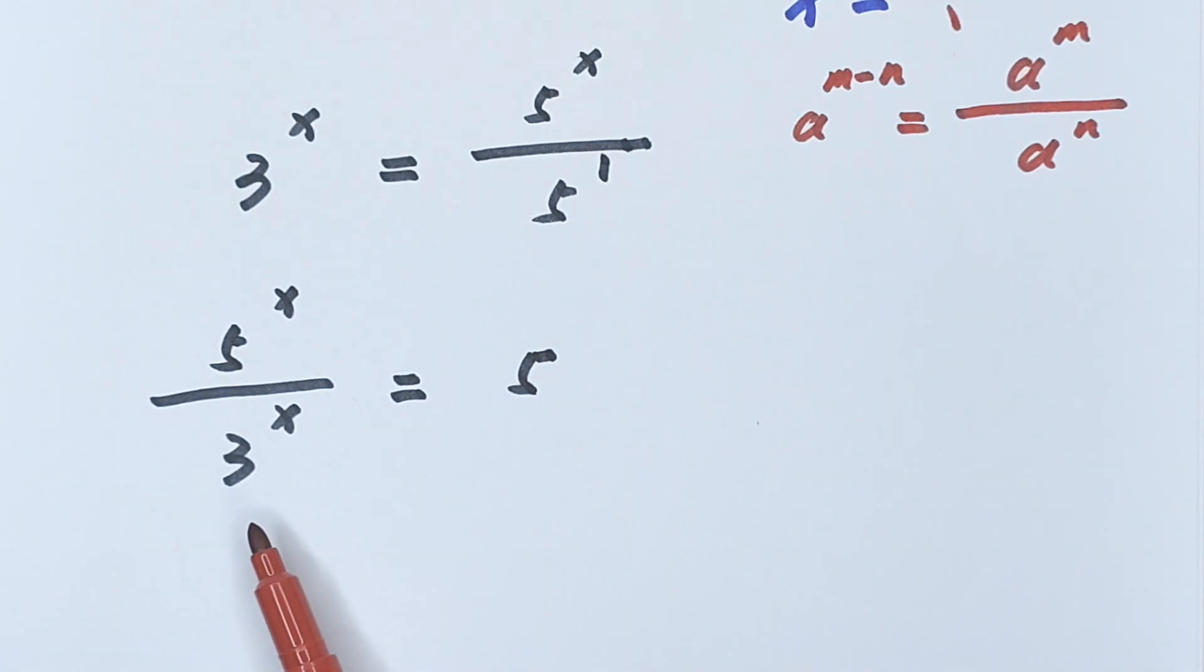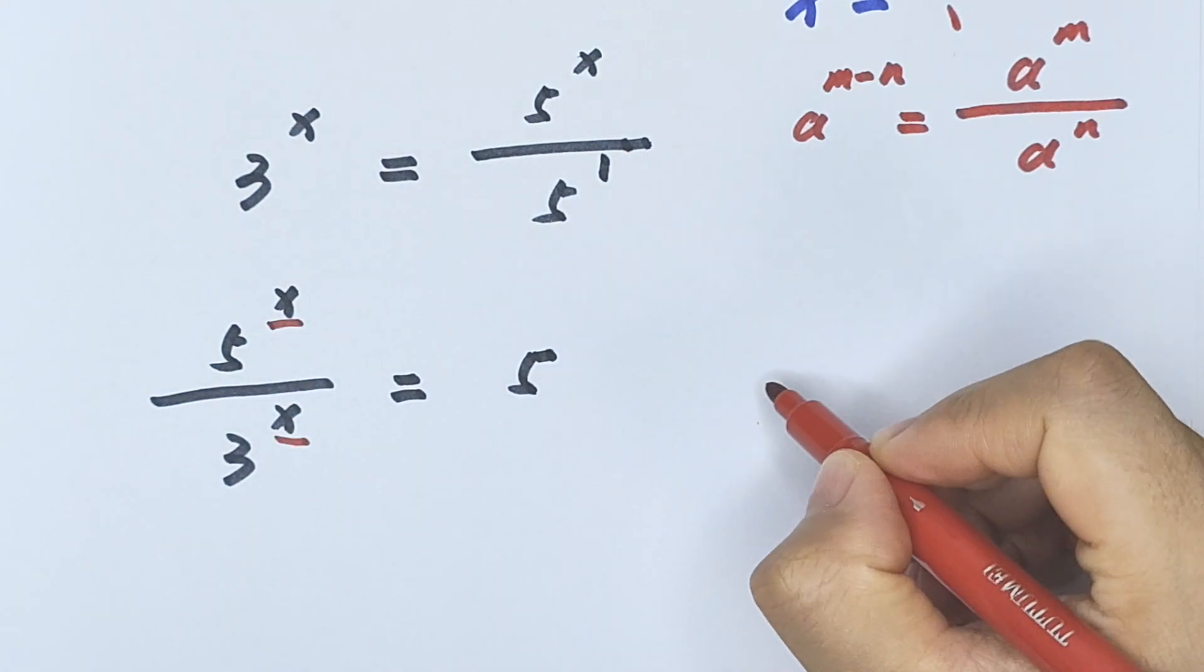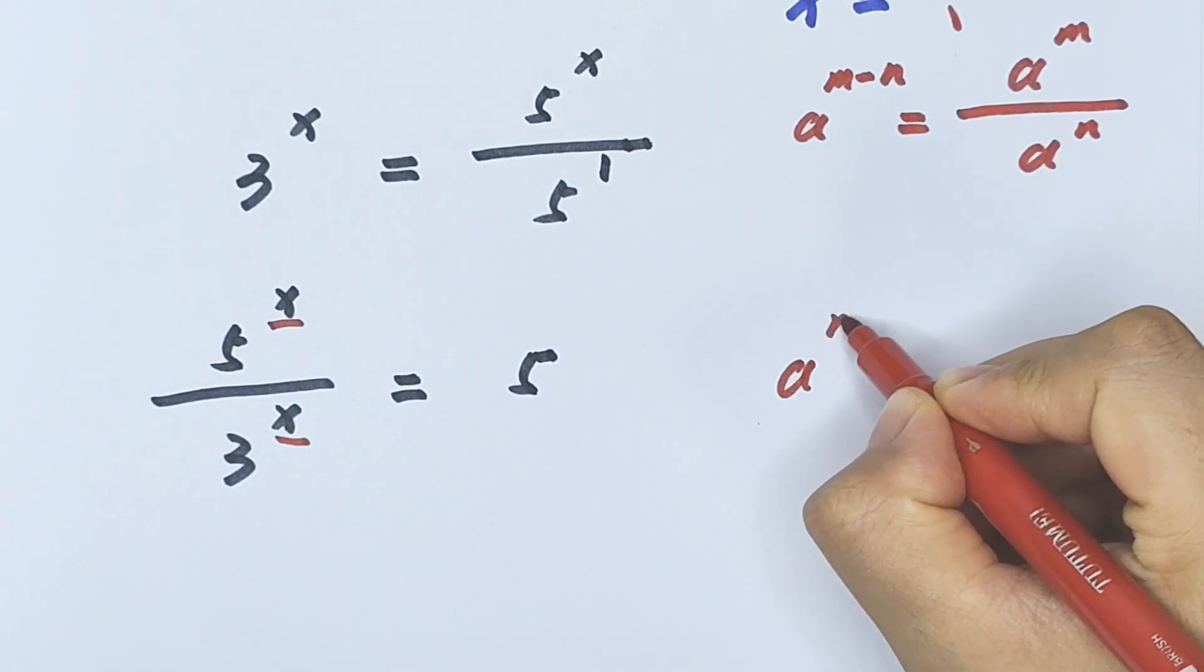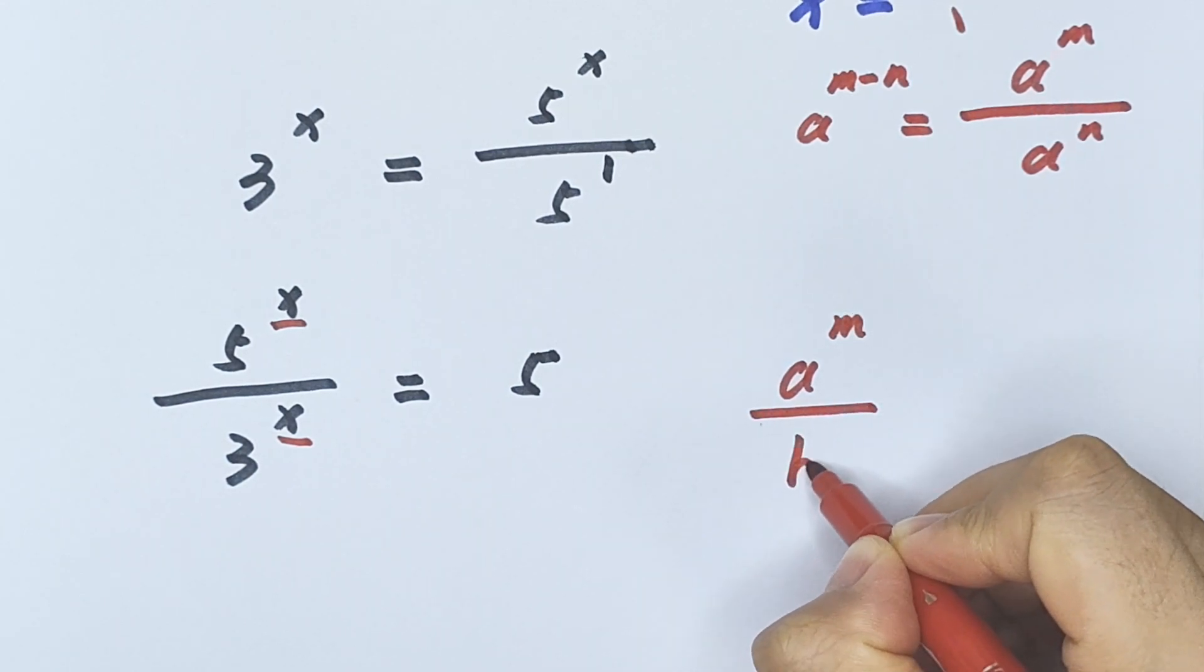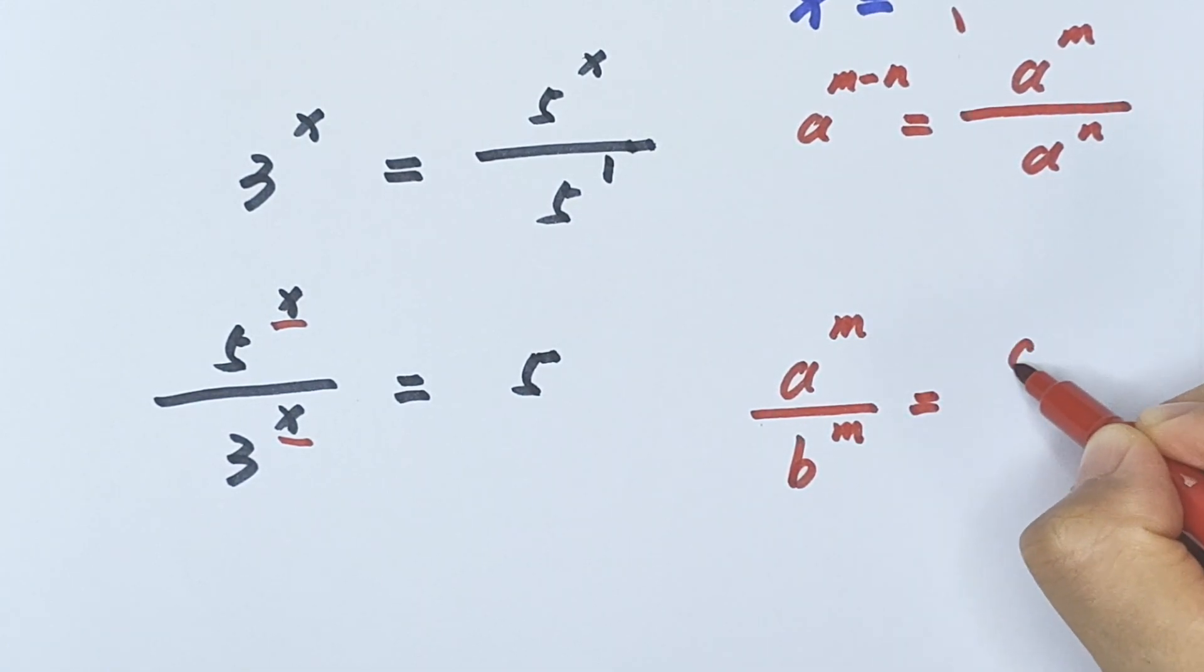Okay, we look at the left side. We have the same exponents, so a to the power of m divided by b to the power of m equals a divided by b, all to the power of m.